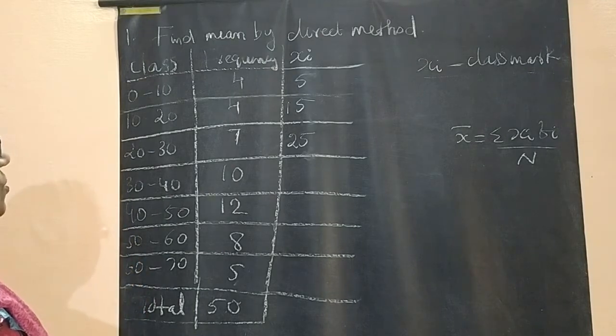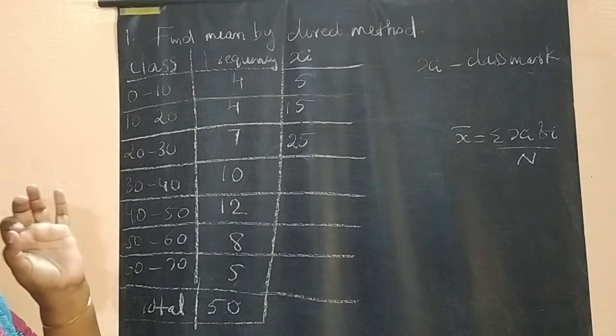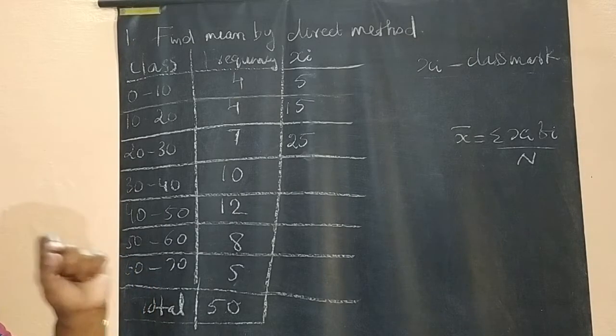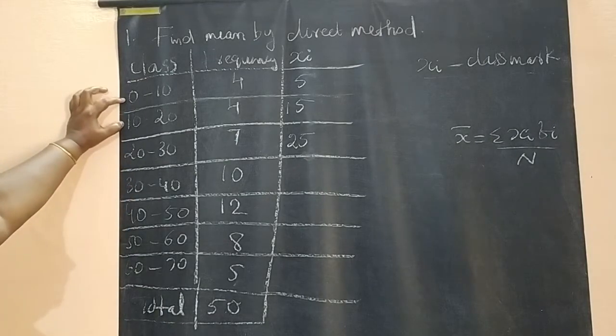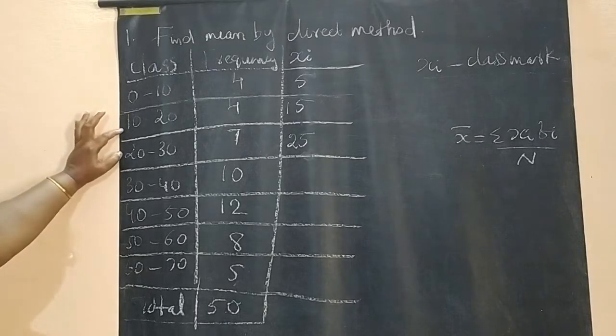Class size or class width means the difference between two continuous lower limits. These are the two continuous lower limits, difference is 10. Lower limits 10 and 20, difference is 10. 20 to 30, difference 10.